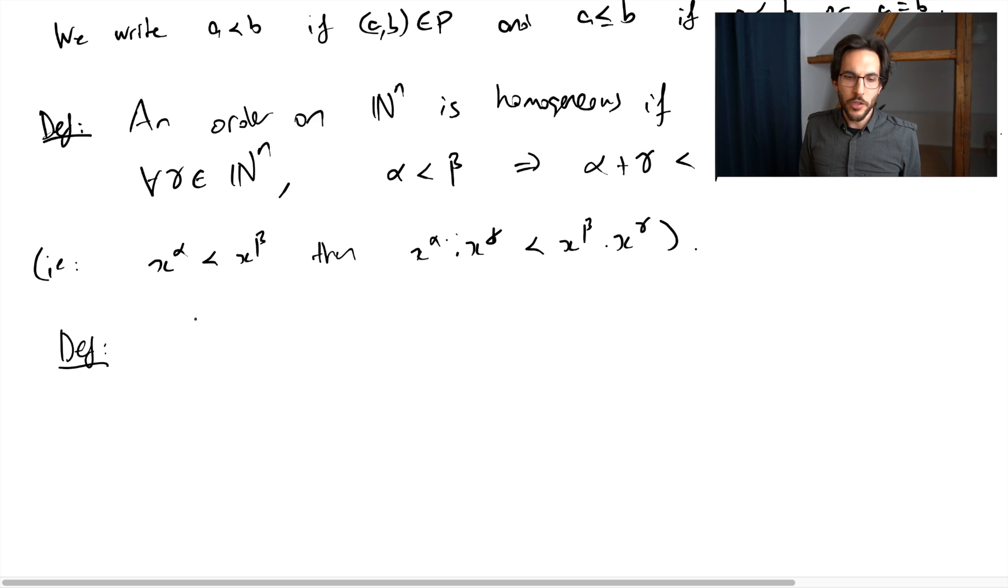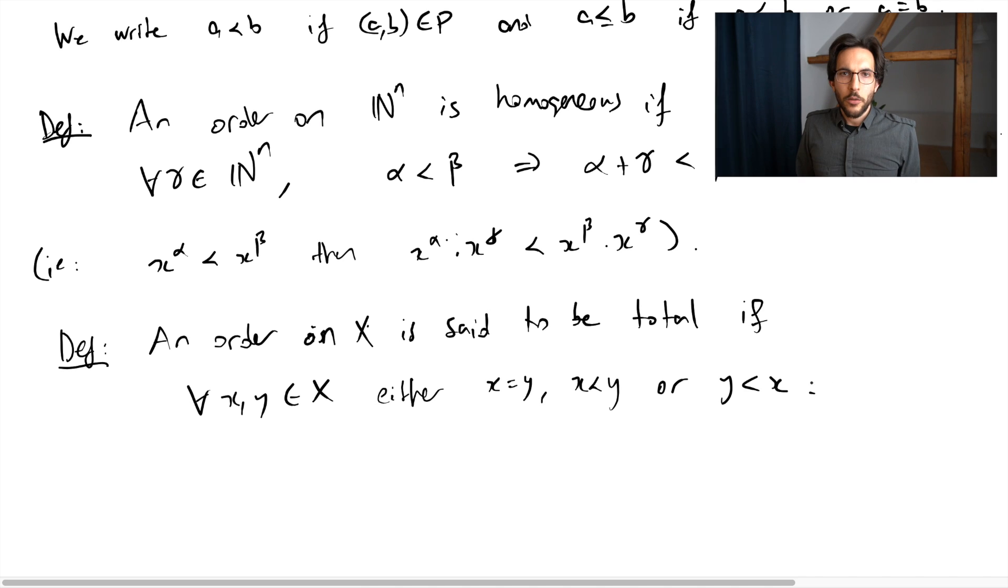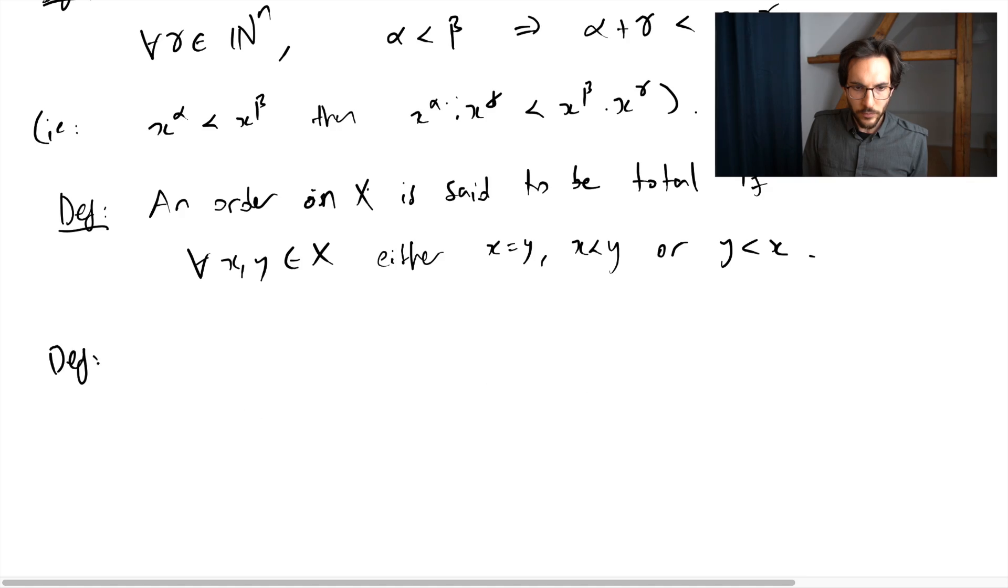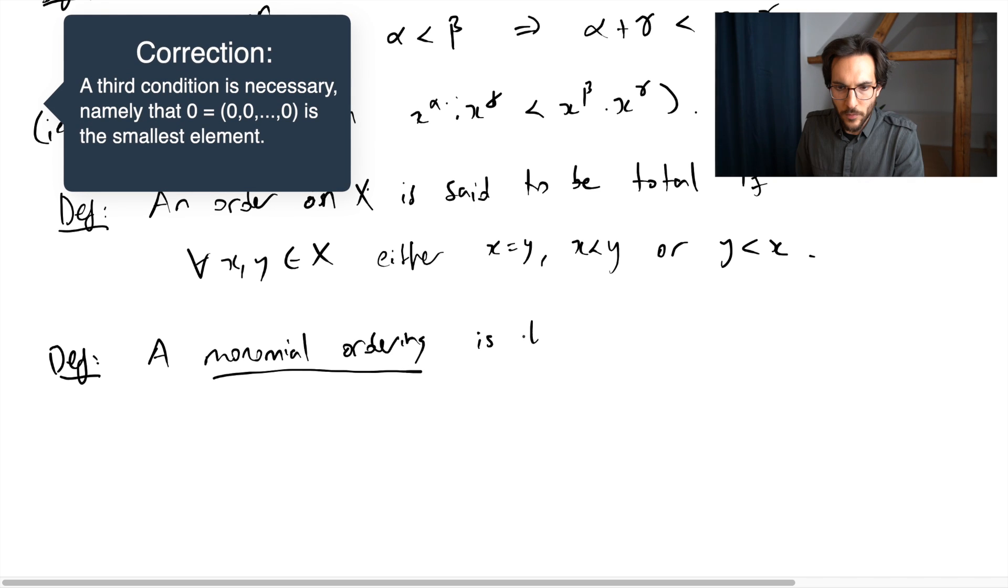We need one more structure, which is the following: I should be able to compare any two elements. So I should be able to compare any two monomials. An order is said to be total ordering if, for any pair of elements in X, either x equals y or x is less than y or y is less than x. And now that completes the definition of a monomial ordering. So a monomial ordering is an order induced on the set of monomials through a total homogeneous ordering on the set of integer tuples.